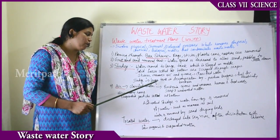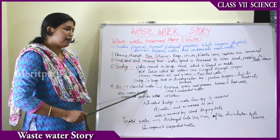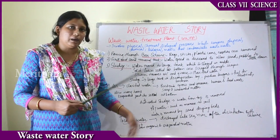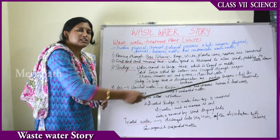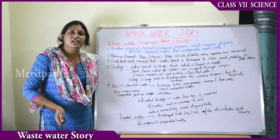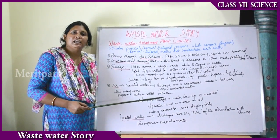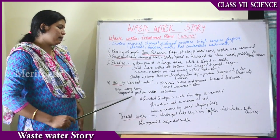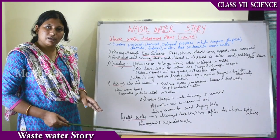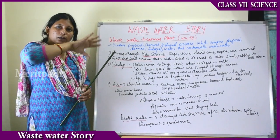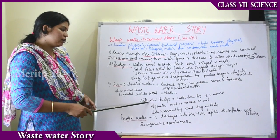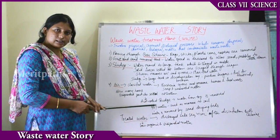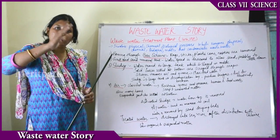From the clarified water, air is passed through it. This air helps the bacteria from the sludge to grow and multiply. The bacteria eat the human waste, food waste, soap, and unwanted materials present in the water. After many hours, the suspended particles settle at the bottom, and the water floats at the top. The top water is removed, and the remaining settled particles are known as activated sludge.